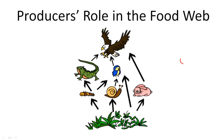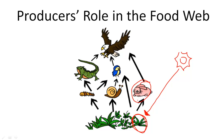Here we have the sun, which gives energy through the form of light to this grass. The grass then goes through photosynthesis and makes energy itself so that it can keep living. This rabbit eats the grass and gets its energy that way. Then the rabbit gives energy to the hawk, who eats it.